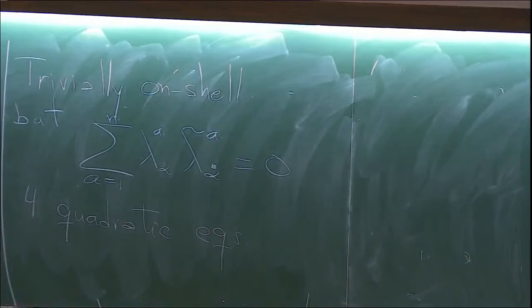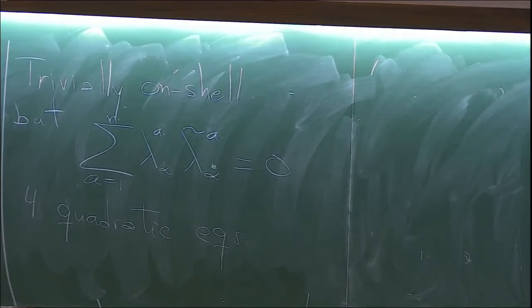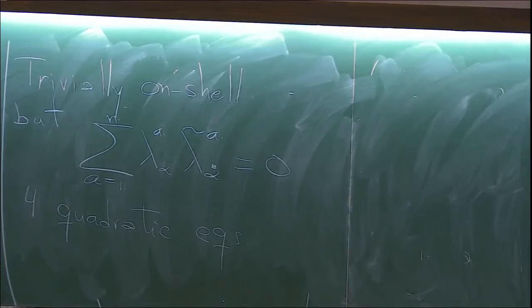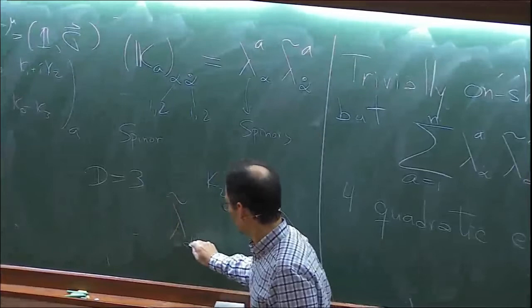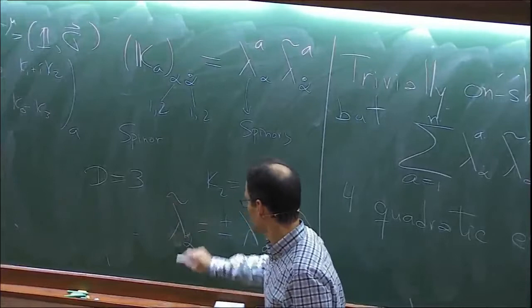The answer about other dimensions is that this works beautifully in three and six dimensions, but gets much harder in higher dimensions. To go to three dimensions, all you have to do is set one of these components to zero — making it a real matrix — and impose that lambda-tilde is equal to plus or minus lambda. So in three dimensions you simply impose that constraint and you're done.